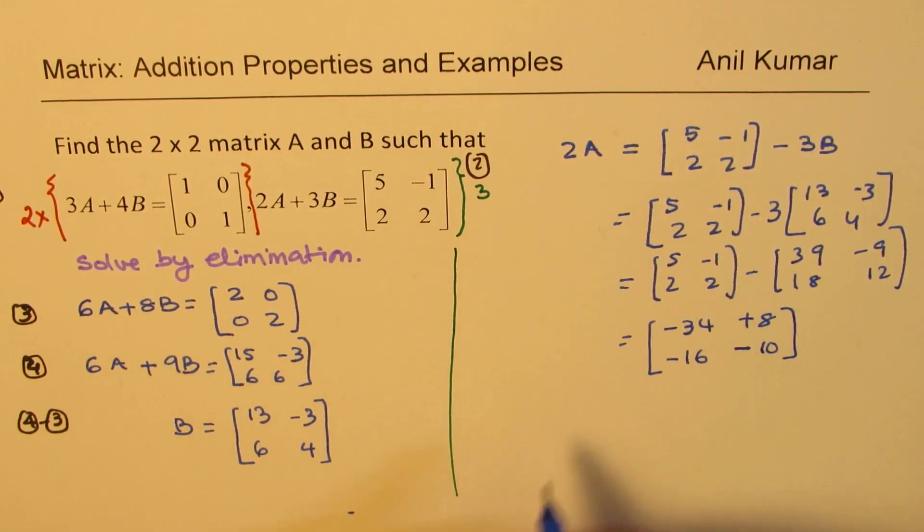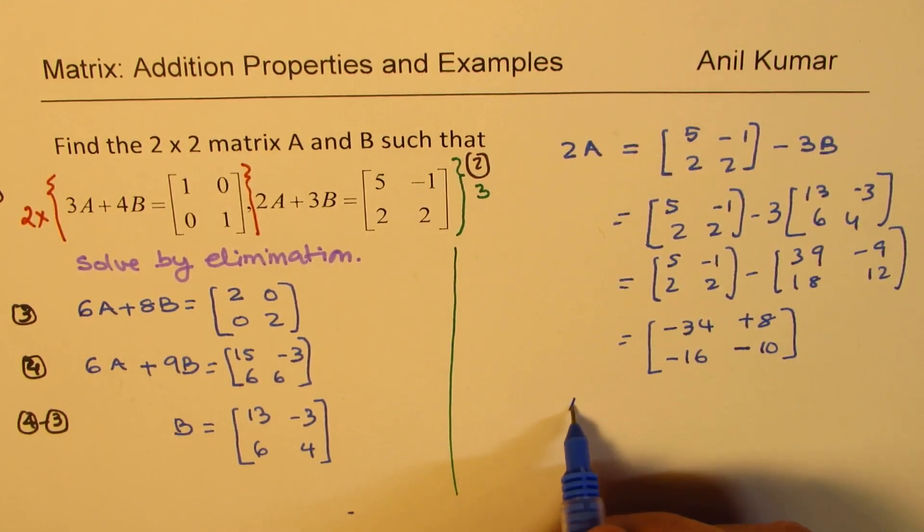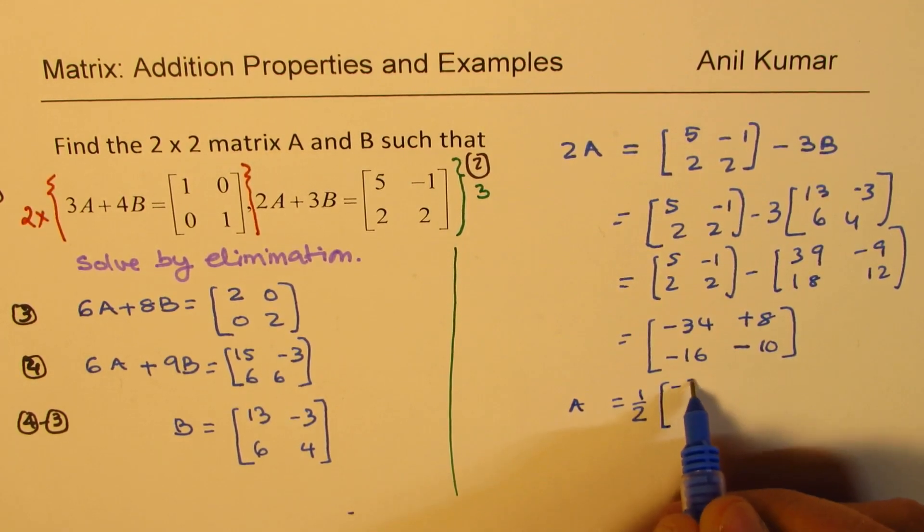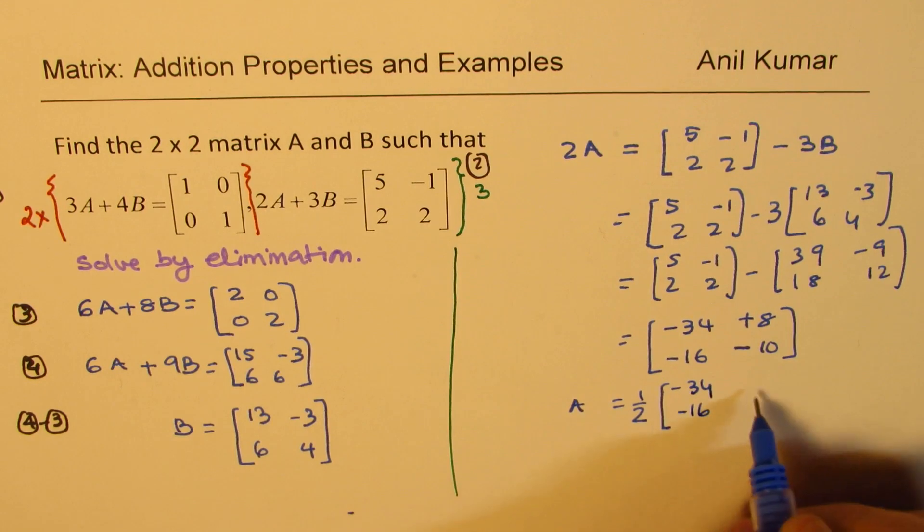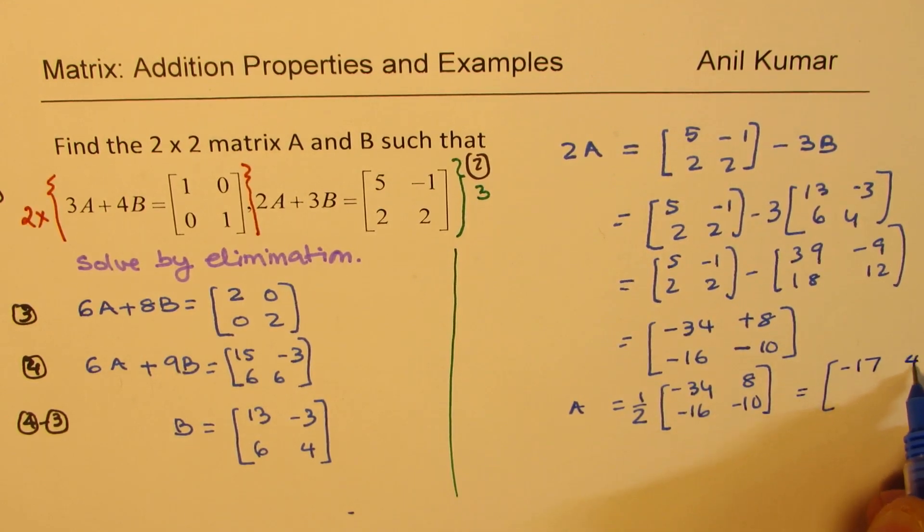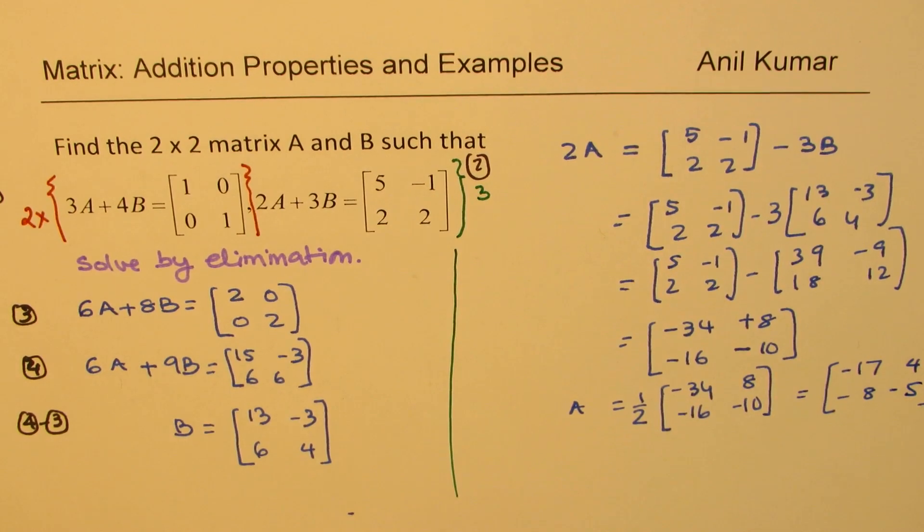Now that is twice A. So what is A equals to? A will be equals to half of this, [-34 8; -16 -10], which is equal to [-17 4; -8 -5]. Correct?